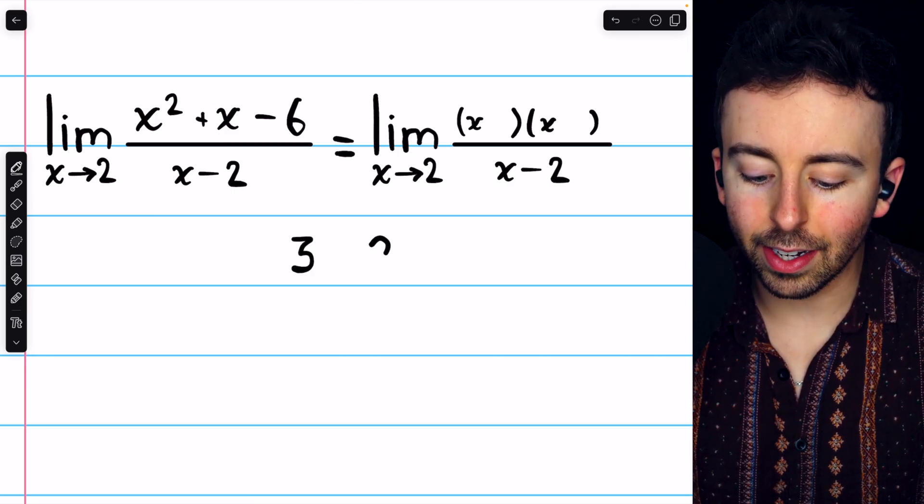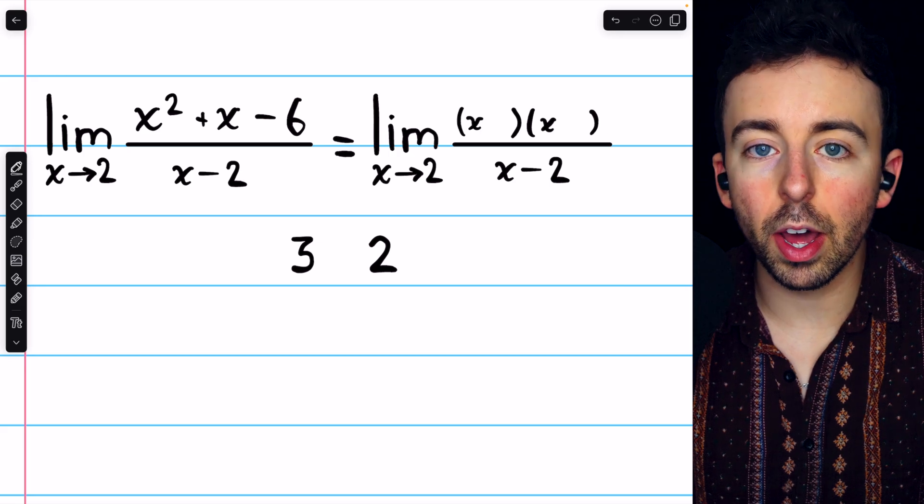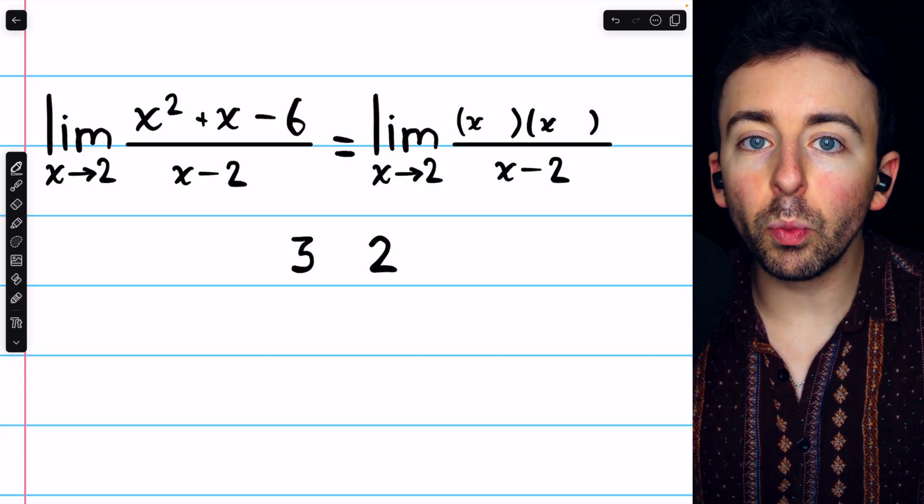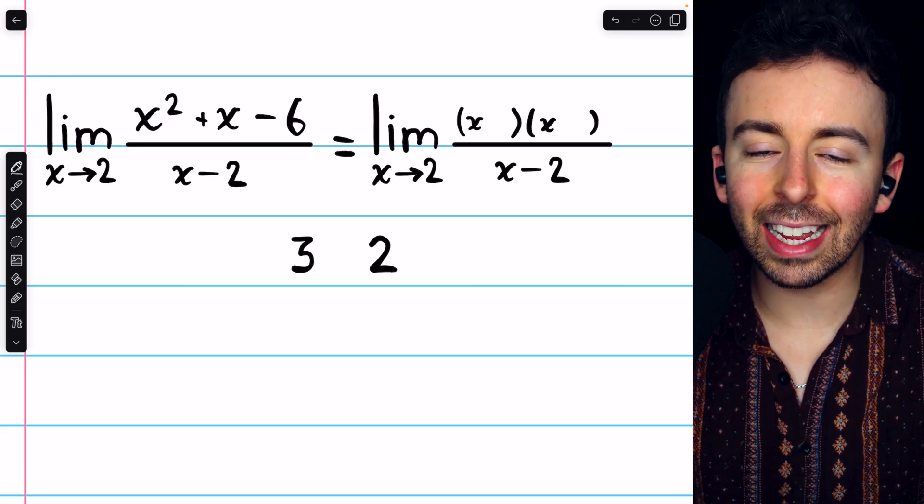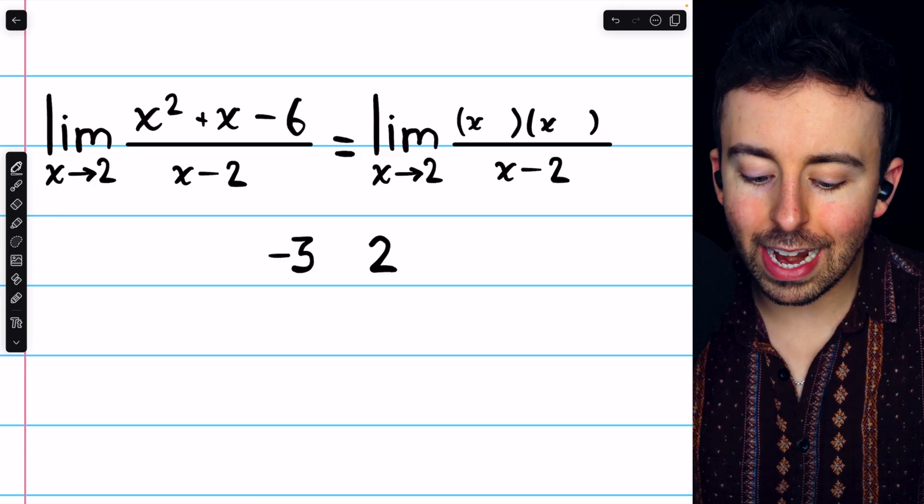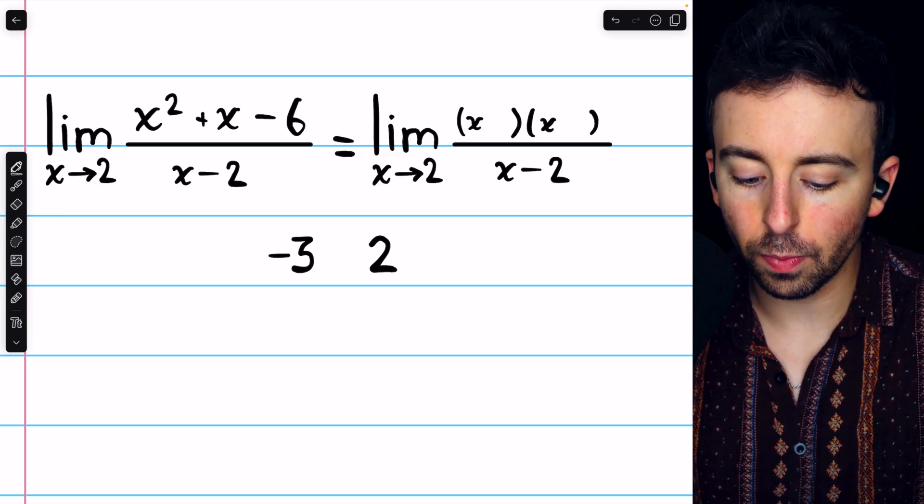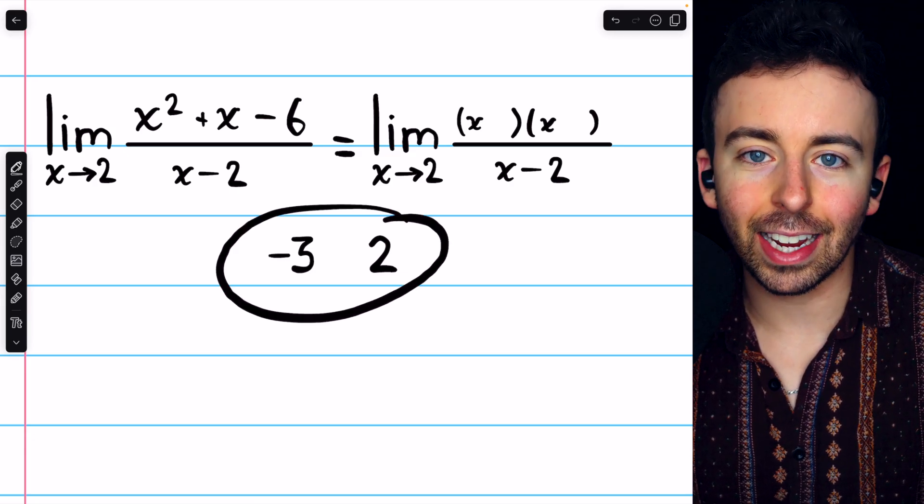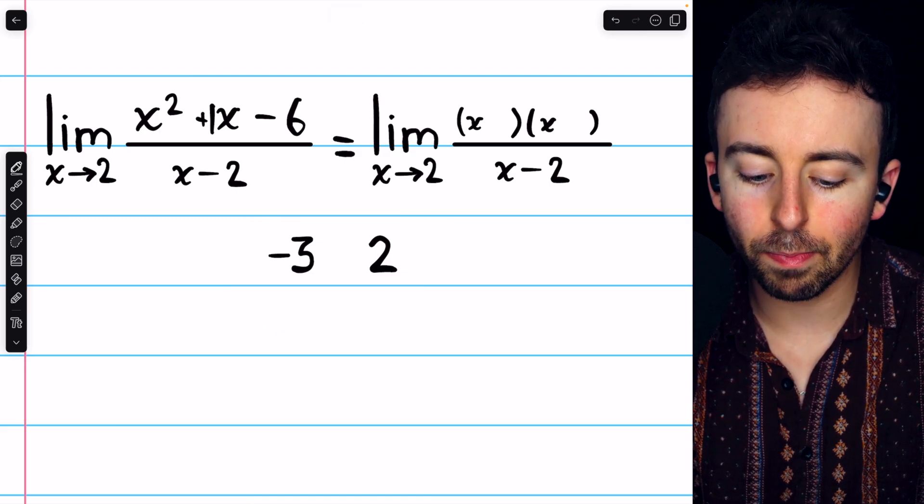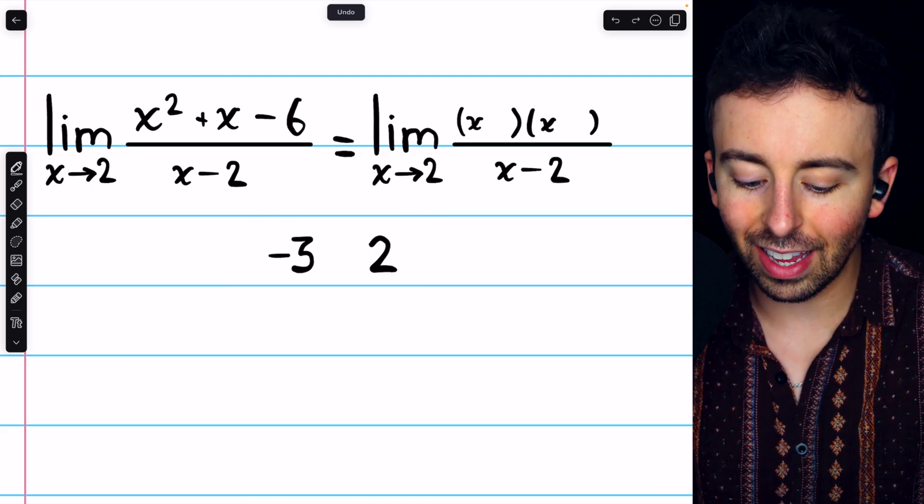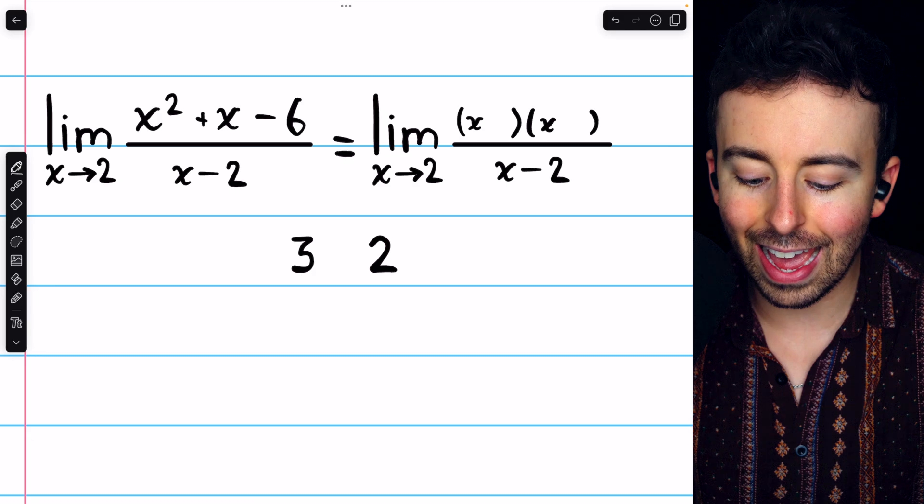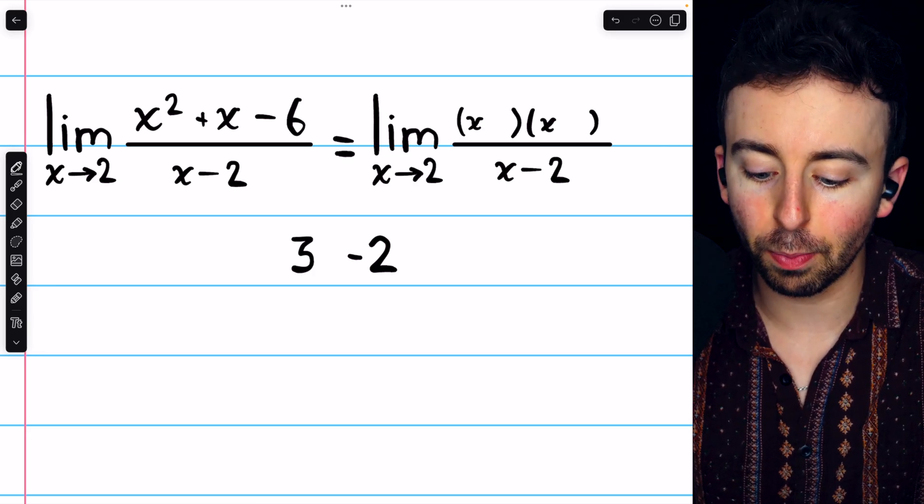You may think about 3 and 2 because they differ by 1 and multiply to 6. But we need them to multiply to negative 6. So we might try negative 3 and positive 2. But these add to negative 1. We need them to add to positive 1. So we'll settle on positive 3 and negative 2. That works perfectly.